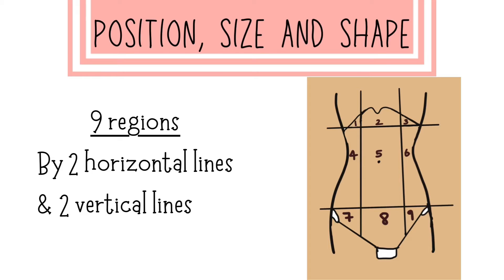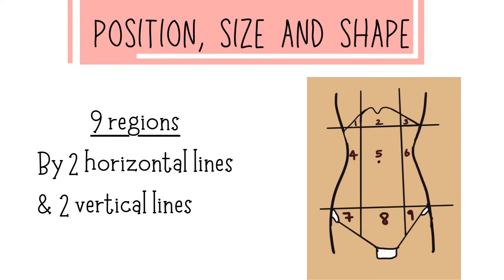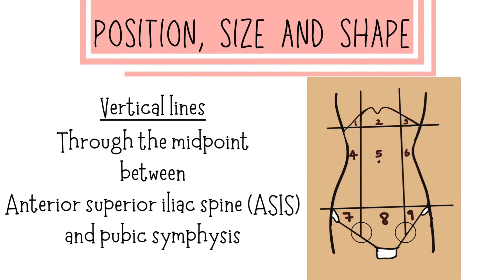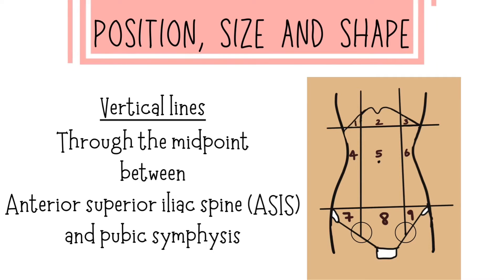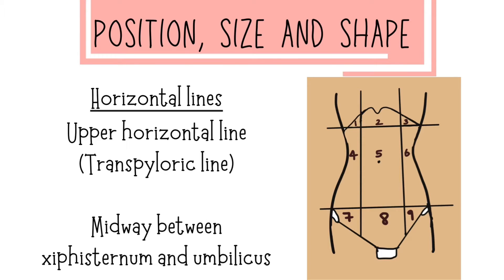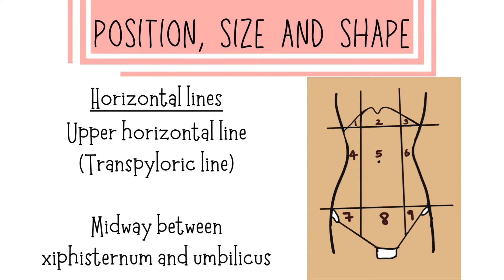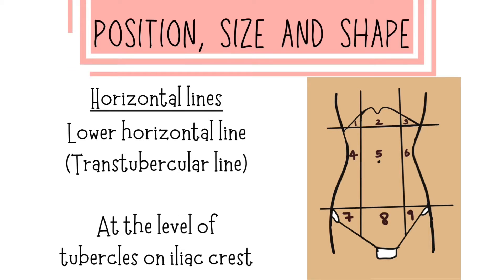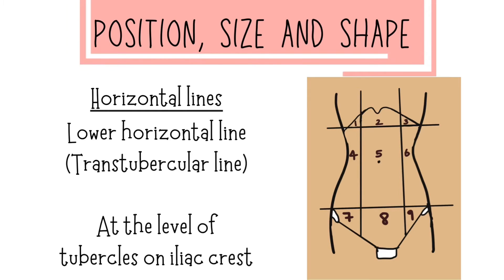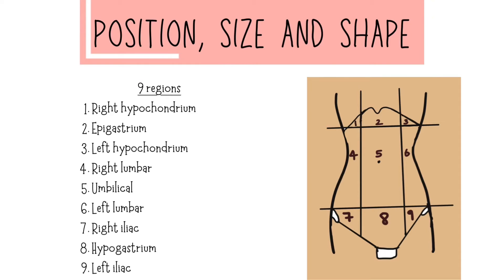During inspection, we have to define the position, size, and shape of the lump. To identify the position of the lump, we divide the abdomen into nine regions using two horizontal lines and two vertical lines. The two vertical lines are drawn through the midpoint between the anterior superior iliac spine and the pubic symphysis. The upper horizontal line is called the transpyloric plane, passing through the pylorus of the stomach, midway between the xiphisternum and the umbilicus. The lower horizontal line is called the transtubercular line, at the level of the tubercles of the iliac crest.